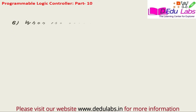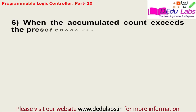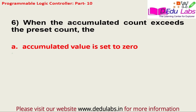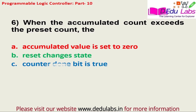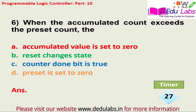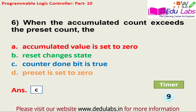Question number six: When the accumulated count exceeds the preset count — option A, accumulated value is set to 0; option B, reset changes states; option C, counter done bit is true; option D, preset is set to 0. The answer is option C, that is the counter done bit is true.